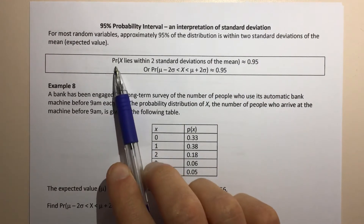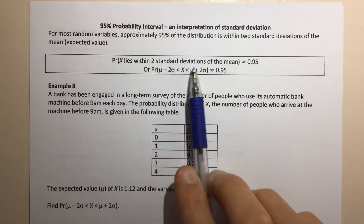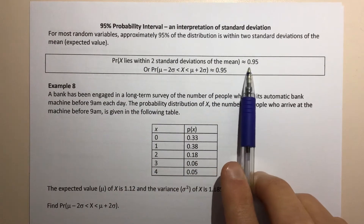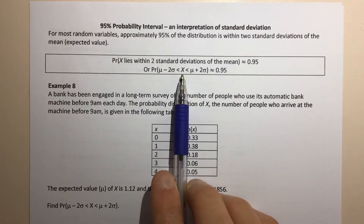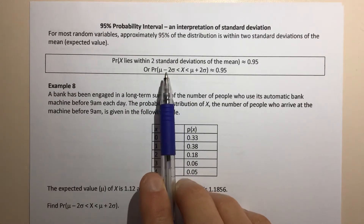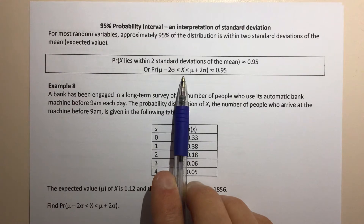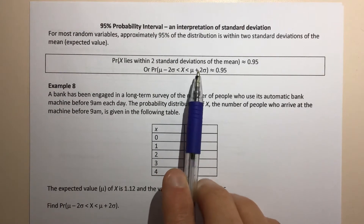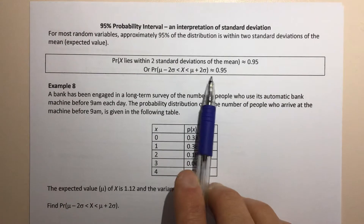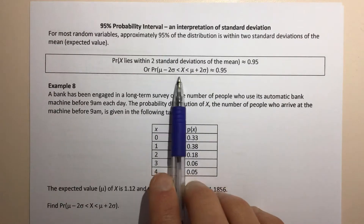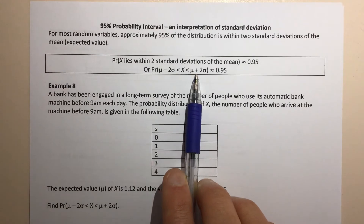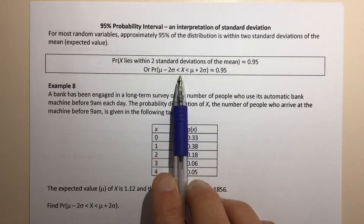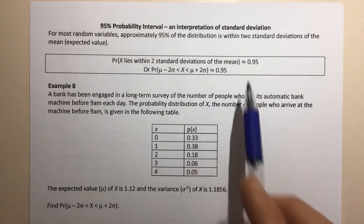We could write that as: the probability that X lies within two standard deviations of the mean should be approximately equal to 0.95. In notation, that's the probability that X is greater than the mean minus two times the standard deviation, but X is less than the mean plus two times the standard deviation — that probability should be approximately 0.95. This is saying the probability that X is between two standard deviations below and above the mean is approximately 95%.